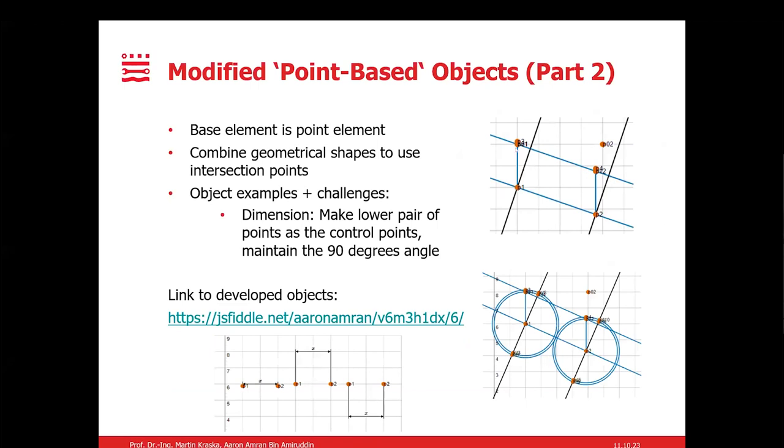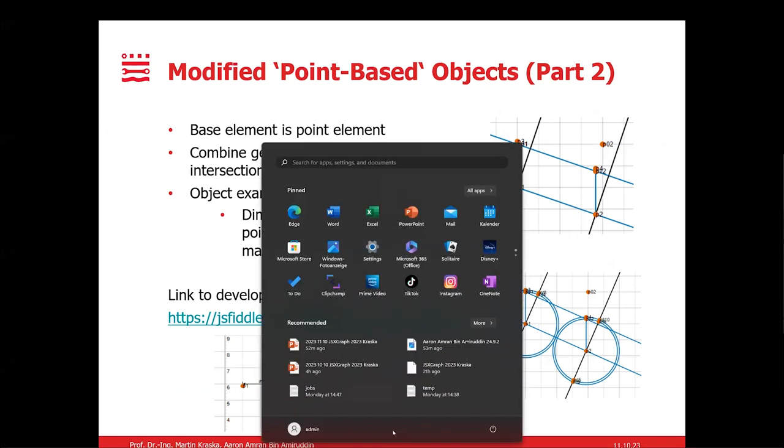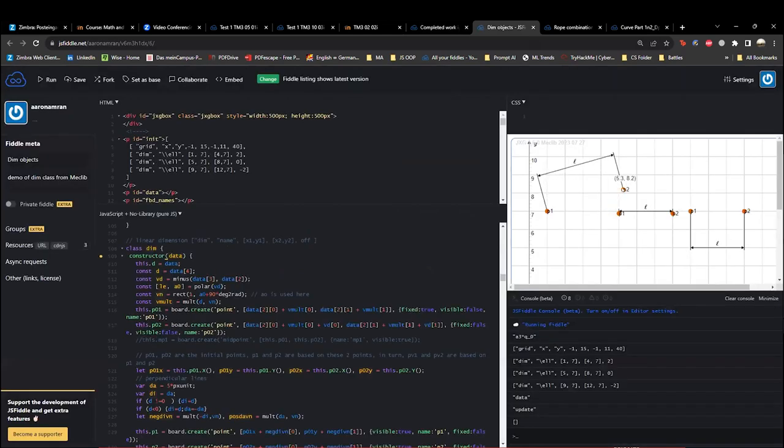Now, next one is in this case of the dimension object. The main challenge was to make the lower pair of the points as the control points and to maintain the 90 degree angles. So what I did was to make use of the circles and the lines and the corresponding intersections. From the intersection points, after I have already hidden the visibility of the unneeded elements, the final output is that the objects are now interactive.